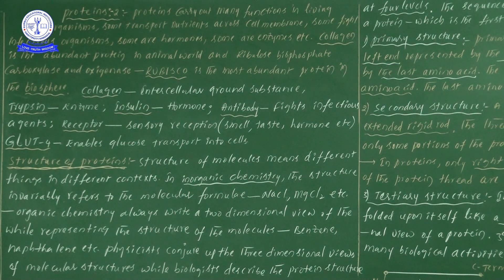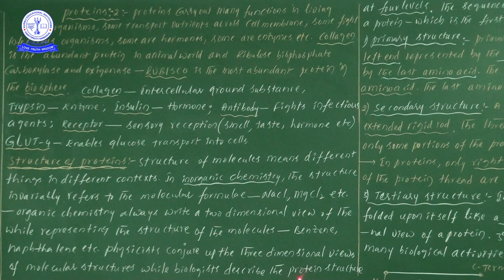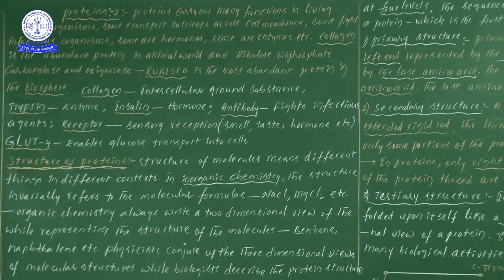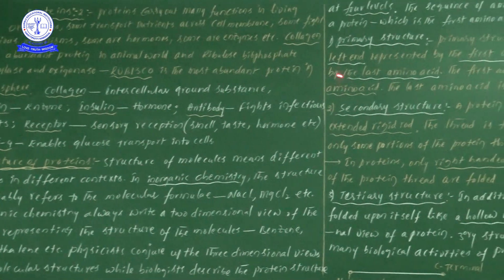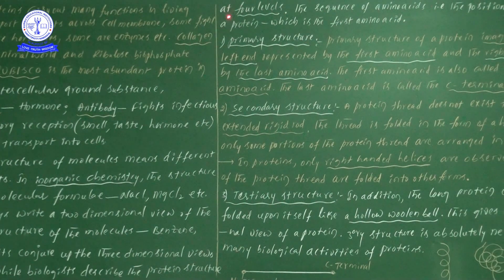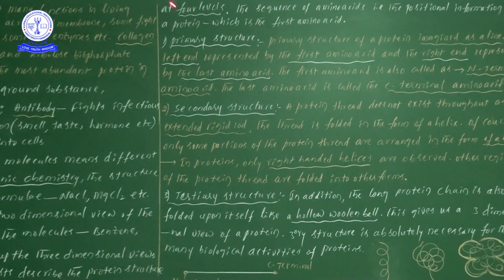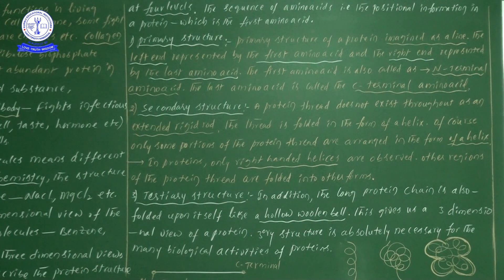What about biology? In biology, we will explain the structure of proteins at four levels. There are four different levels we will observe. According to the biology teacher's point of view, we will divide the protein structures into four levels.